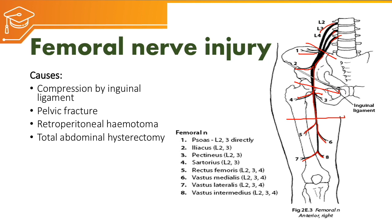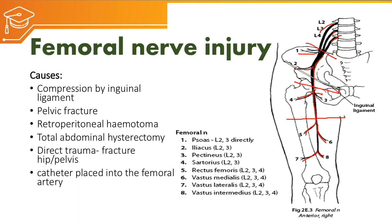Hysterectomy is a surgery done to remove the uterus with an abdominal incision. Direct trauma such as fracture of the pelvis or head of the femur, dislocation of the head of the femur, and catheter placement into the femoral artery — which lies very close to the femoral nerve in the femoral triangle — may also compress the femoral nerve.